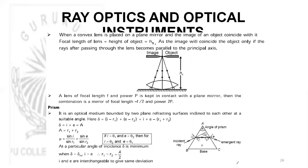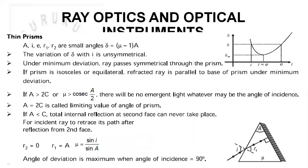For a prism, the key formulas are: delta = I + A minus A (total deviation), A = R1 + R2, and mu = sin((A + D)/2) / sin(A/2), which is the prism formula for minimum deviation. For thin prisms, deviation = (mu minus 1) * A. If the angle of the prism A is greater than 2C (twice the critical angle), there will be no emergent light. If A is less than C, total internal reflection at the second surface can never take place. For an incident ray to retrace its path after reflection from the second face, R2 = 0 and R1 = A.